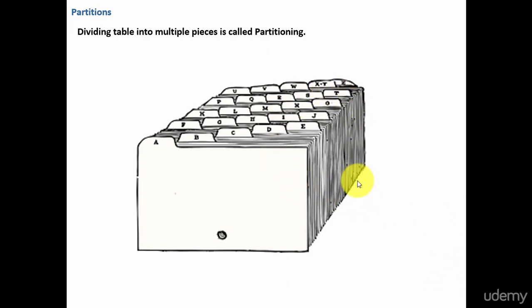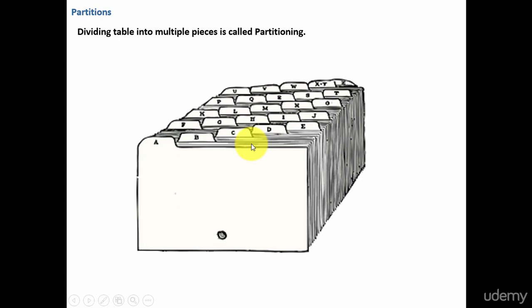And you want to search for a file named Peter. If you want to search those thousand files, it's tough. Instead of that, if you organize them alphabetically and you have a tag showing the partition name, you can go to the P partition and then search for the name Peter. Just the same way, Oracle also divides your table into multiple pieces to manage the data better.